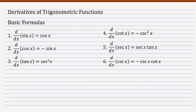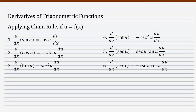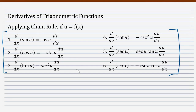If x is replaced by u, and u is a function of x, then simply apply the chain rule. The formulas are still the same — x just becomes u — but since u is a function of x, you must multiply by the derivative of u with respect to x. More often than not, we will be dealing with this set of formulas wherein u is already a function of x.